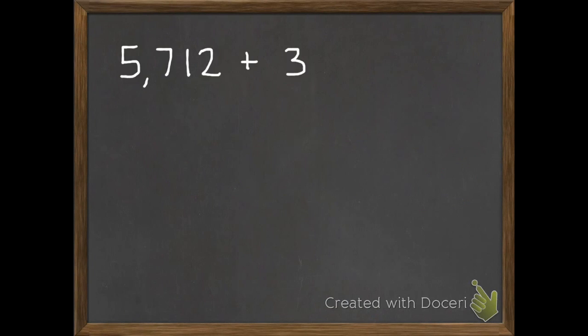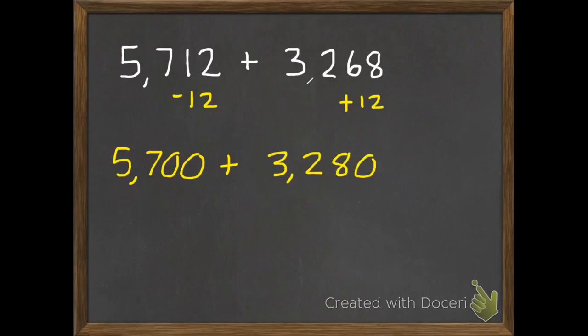If we are adding to the thousands, same thing. So I could change this 5,712, get rid of the 12, add it to the other side. Then I have 5,700 plus 3,280. I could even move more things around. I could move the 280 to the 700. I'm just going to leave it like this and add my place value spots. 0 plus 0 is 0. 0 plus 8 is 8. 7 plus 2 is 9. 5 plus 3 is 8. So I get 8,980. And I did that all mentally.